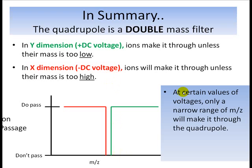So here's how the quadrupole is a double mass filter. At certain values of the DC and alternating RF voltages, only a narrow range of mass charge ratios will make it through. Like this narrow range, this is like a little window that will make it through. If you're below, they will be cut off by this filter. If they're above this window, they'll be cut off by the other filter. And so only a little window makes it through.